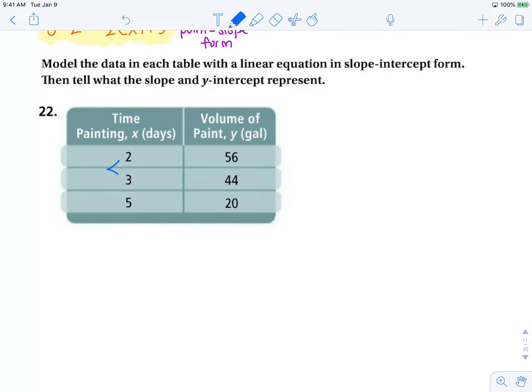So our rate of change here from 2 to 3 is 1. And our rate of change here from 3 to 5 is 2. Our rate of change from 56 to 44 is negative 12. And our rate of change here from 44 to 20 is negative 24.